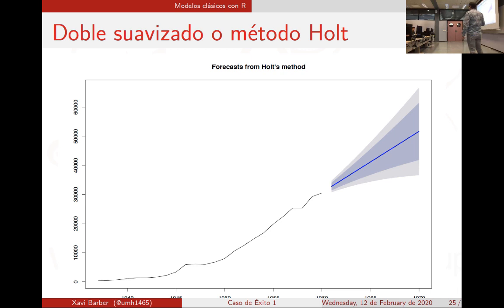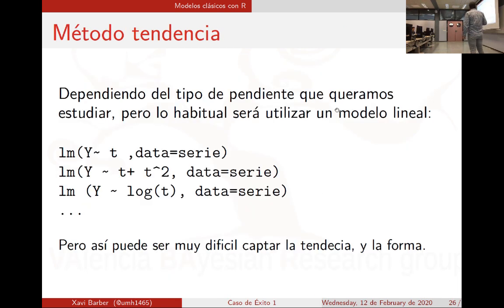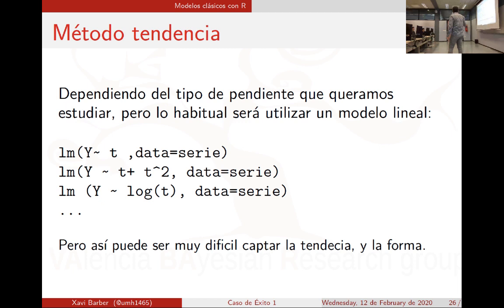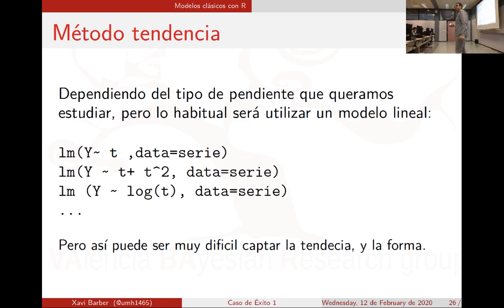Fijaros cómo lo hago con modelos lineales con tendencia. Pongo una variable T; si lo que estoy diciendo es que la serie de ventas de coches la voy a modelizar con el tiempo, hago un modelo lineal de ventas de coches con la variable T, que es 1, 2, 3, 4, 5... Pero si mi tendencia no es exactamente lineal, le pongo T al cuadrado, logaritmo de T, exponencial de T, 1 partido de T, y siguen siendo todos modelos lineales.